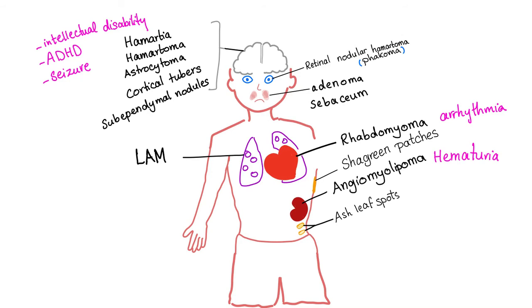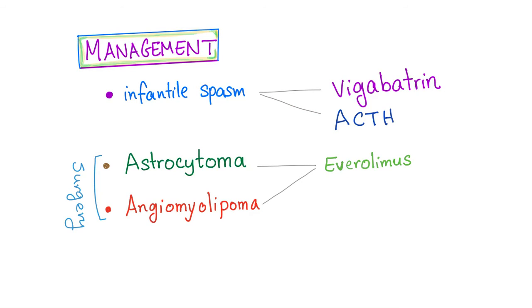Now for the symptoms: angiomyelolipoma of the kidney leads to hematuria; rhabdomyoma of the heart can cause blood flow obstruction and, if severe, arrhythmia. The CNS lesions lead to intellectual disability, ADHD, seizures, and infantile spasms. Tuberous sclerosis is diagnosed using major and minor criteria, which are beyond the scope of this video.